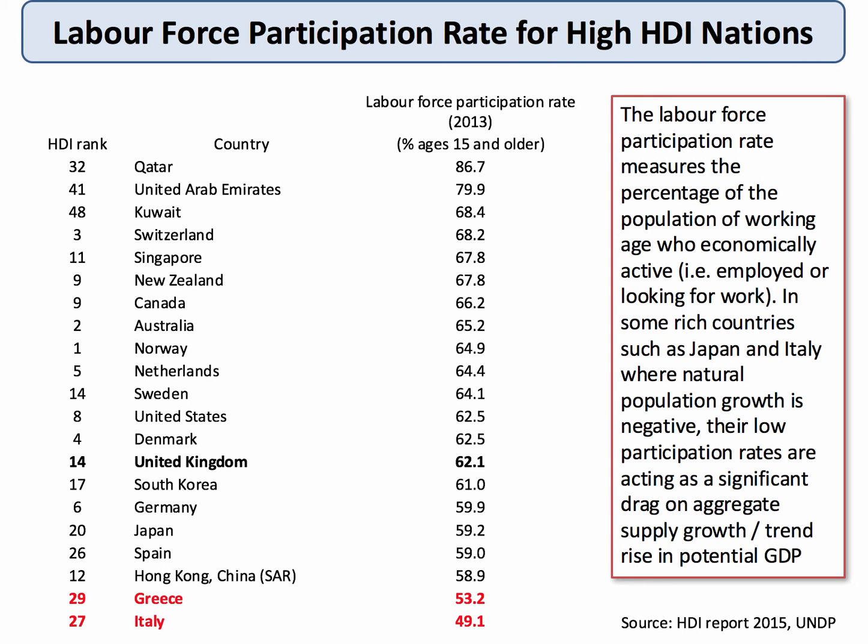Population size is important, but so too is the rate of participation in the labour market. If you get a question on supply-side policies, one of the aims is to try to encourage an increase in labour force participation. This data comes from the United Nations Human Development Report and looks at 2013 information — the percentage of people aged 15 and older who are participating in the labour market, meaning they are economically active: either have a job or are actively looking for work. The UK figure is 62%, and we've got about 8.5 million people of working age who are not active in the labour market. There is quite a big variation across countries, with significantly lower participation in Greece and Italy.